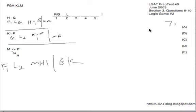Now number seven is a general could-be-true question. We can scan through our valid scenario from choice D of number six to see if we get any hits there. Choice six D did not have G before M, H before F, I before F, K before G, or M before G. So no hits from question six choice D. Choice A, G before M, does not actually work. It turns out that G and M can never both be in together. M requires both F and H, and in that scenario when M was in, G was forced out and K was forced out. So we can never have G with M, nor can we have K with M. So choice A is eliminated.